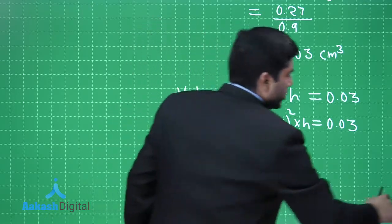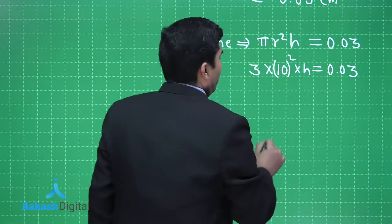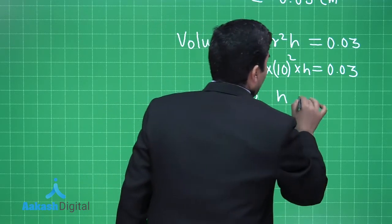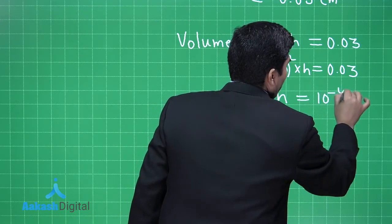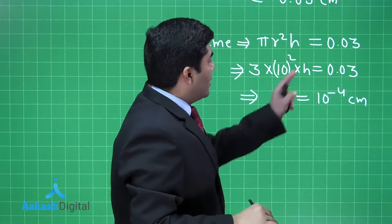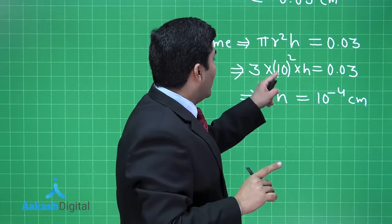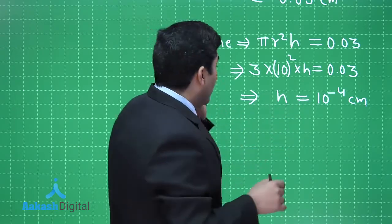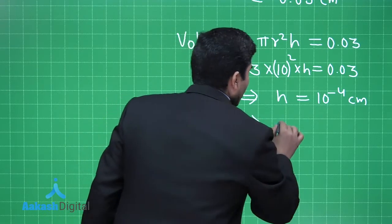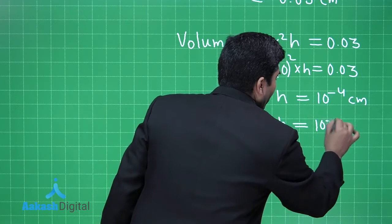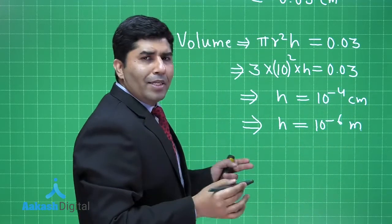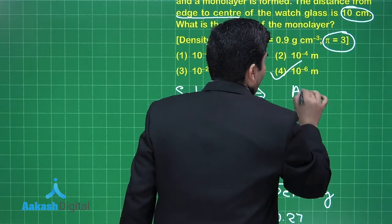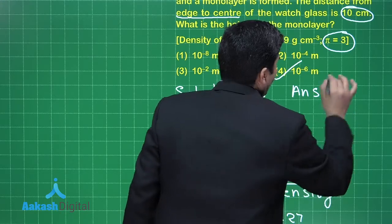We need to find the value of h, which is the thickness of that particular layer. Calculating h gives 10⁻⁴ centimeters. Since 0.03 was in cm³ and the radius was 10 cm, the thickness comes out in centimeters. Converting to meters gives 10⁻⁶ meters. Checking the options, our correct answer is the fourth option.